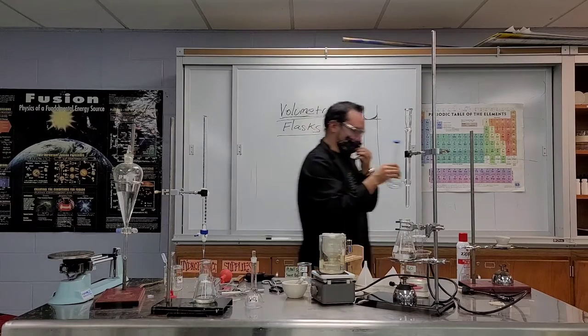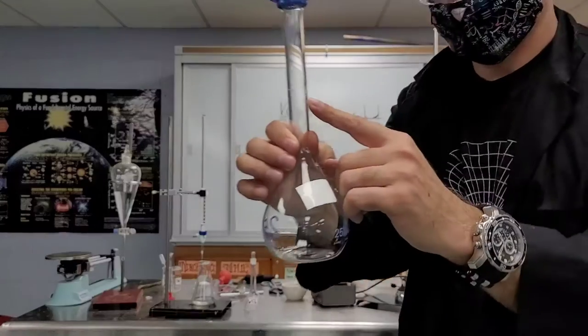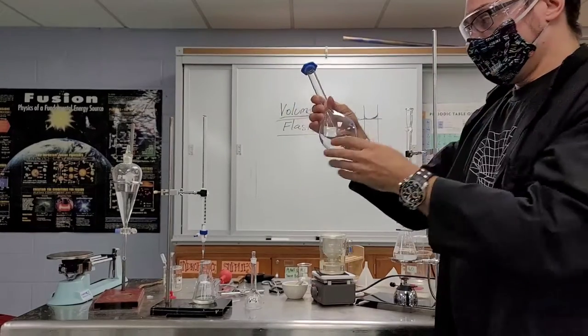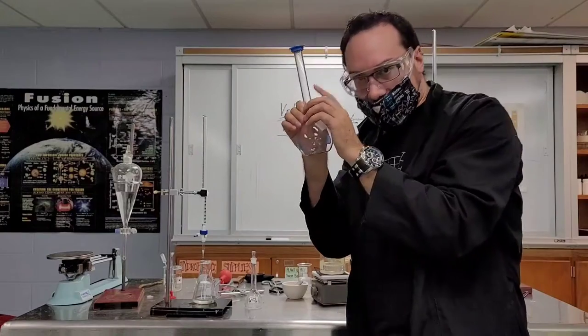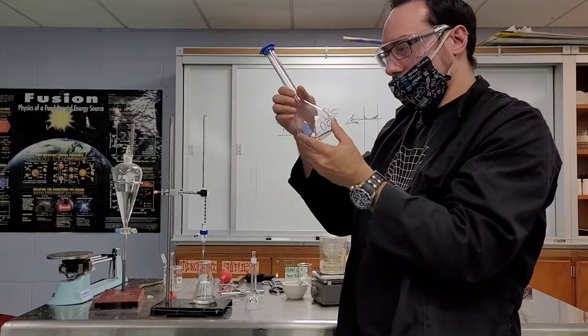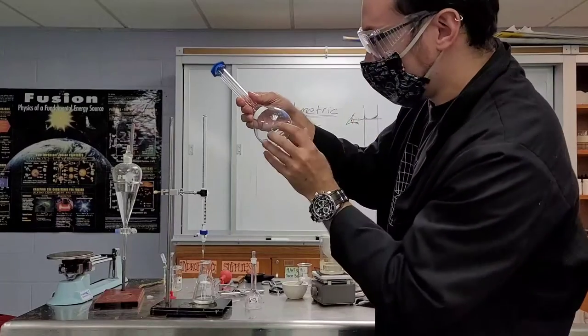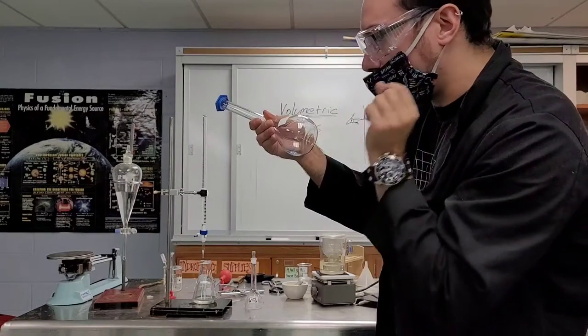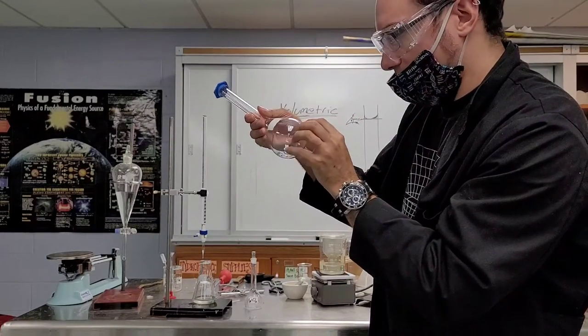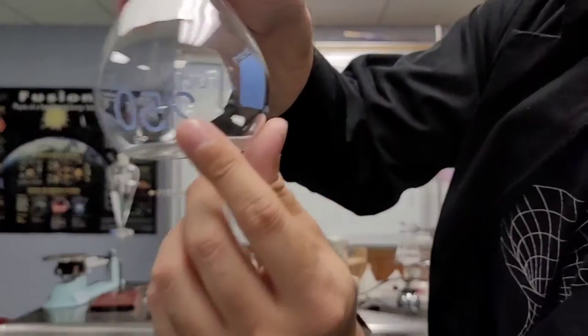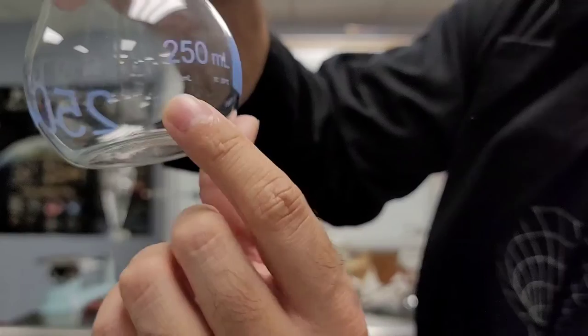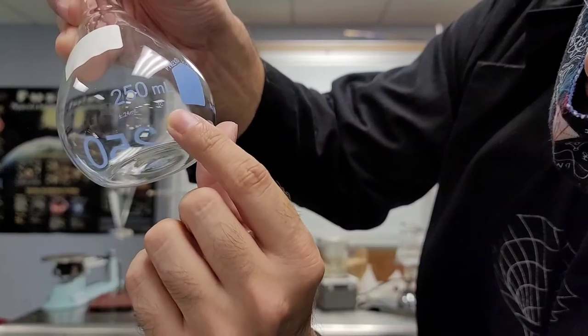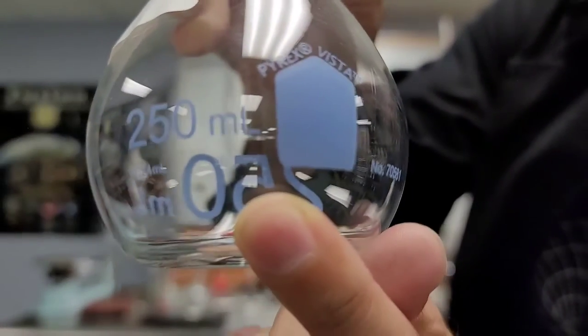These only have one marking on them. There's only one line. These are pretty expensive, made to measure exactly a very accurate amount of volume of a liquid. This says 250 milliliters plus or minus, meaning the error is only 0.24 milliliters at room temperature, at 20 degrees Celsius.